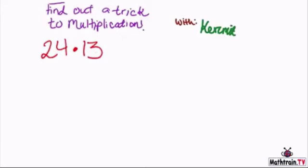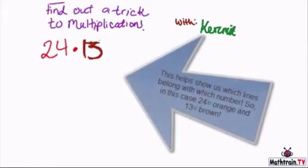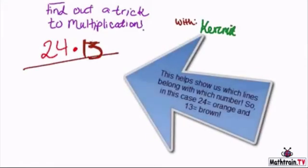But first, let's color code this so that the 24 is orange, so we know which lines are which. And the 13 is now going to be purple. Actually, let's put brown. Okay, so that's how we're going to color code the lines.